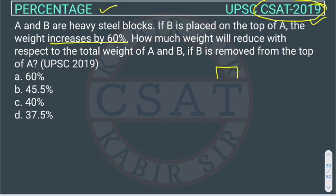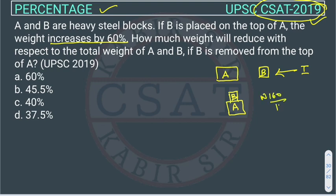So the question is: these are two steel blocks A and B. Initially this is the condition. Now they have put B on top of A. So the weight is getting increased by 60%. We can write 160, or otherwise you can write directly — the weight will increase by 60%.